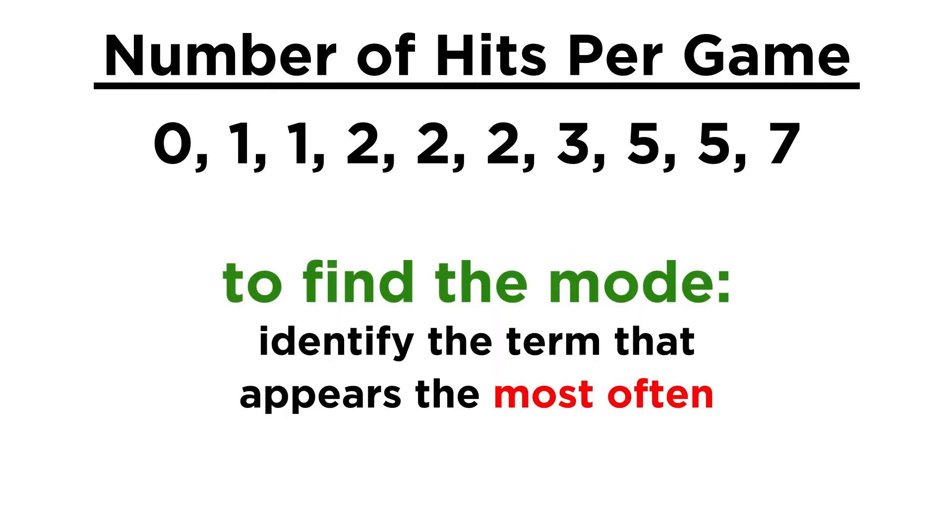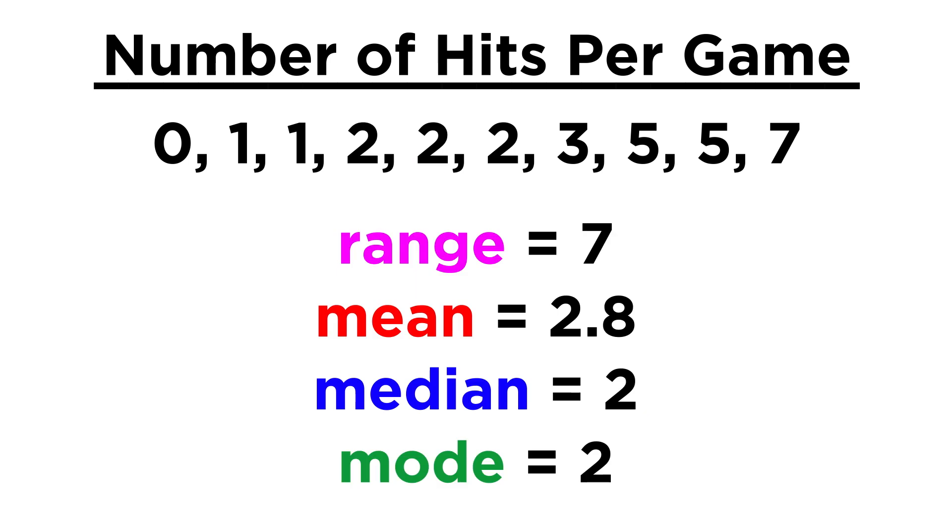Lastly, there is the mode. The mode is the number that shows up with the greatest frequency, or is present the most times. For this set, that's two, because there are three twos, which is more than any other number in the set. So we have a range of seven, a mean of two point eight, a median of two, and a mode of two.